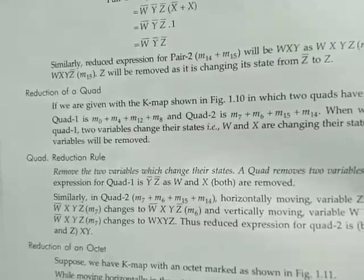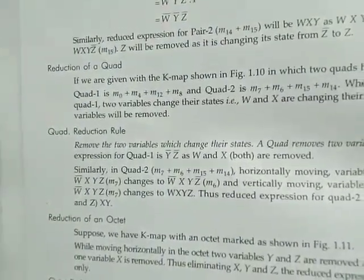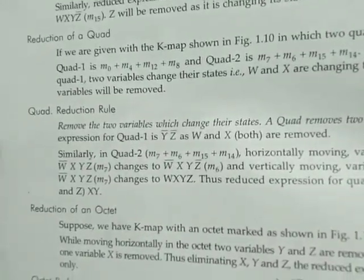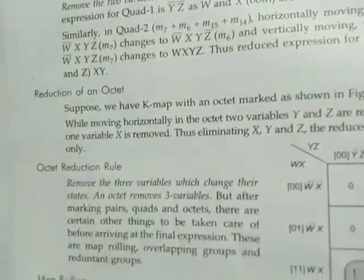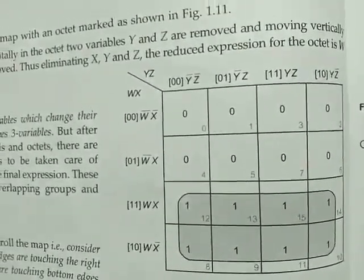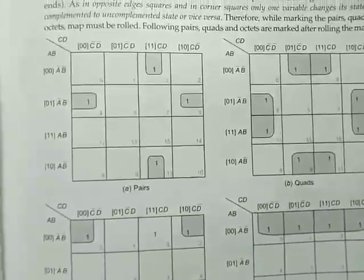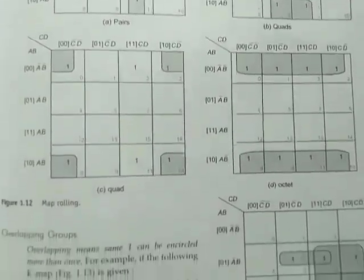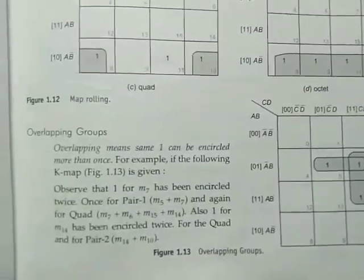First is the quad reduction rule — we form a pair of four. In the case of SOP, we are interested in ones, forming a group of ones. Next is the octet rule, which means forming a group of eight ones together — it should form a rectangle. For a quad, we form a grouping of four together.